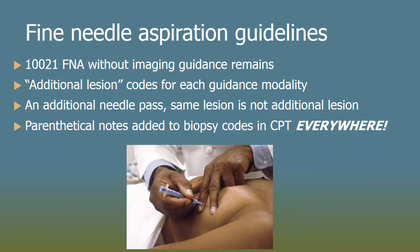The additional lesion codes for each guidance modality simply add one digit: for example, 10005 for ultrasound initial lesion, 10006 for ultrasound additional lesion — being careful to note that an additional needle pass of the same lesion is not coded as an additional lesion. There are also many parenthetical notes added throughout CPT wherever there's a biopsy code, directing coders to the FNA codes if applicable, distinguishing them from solid core biopsies.